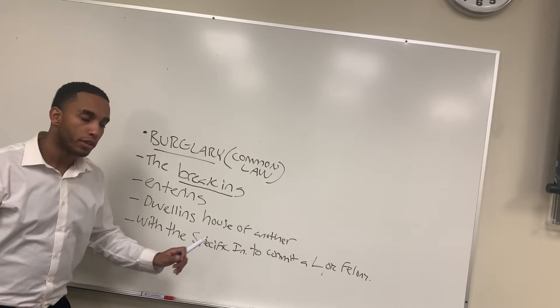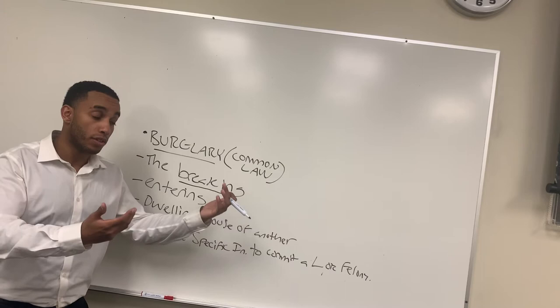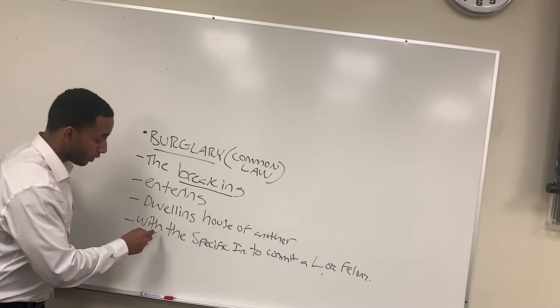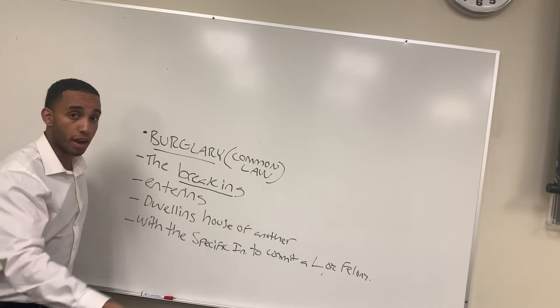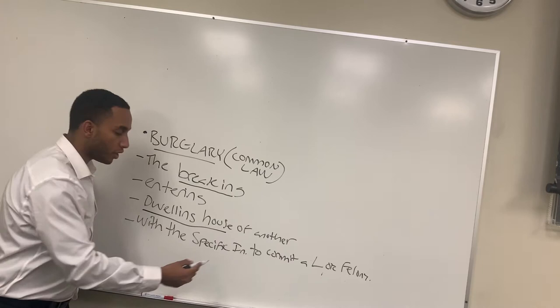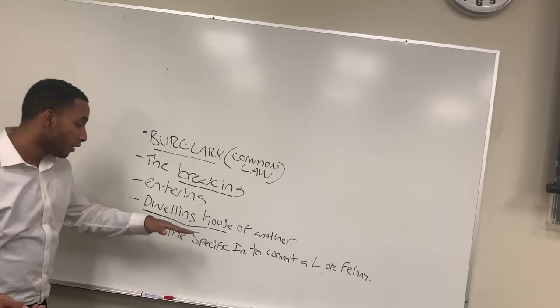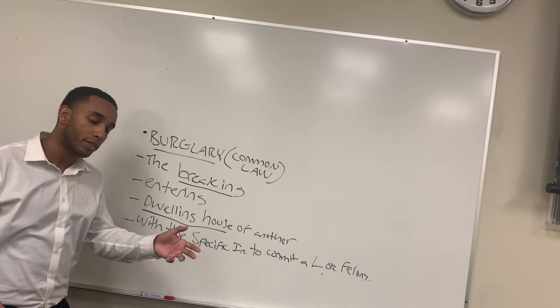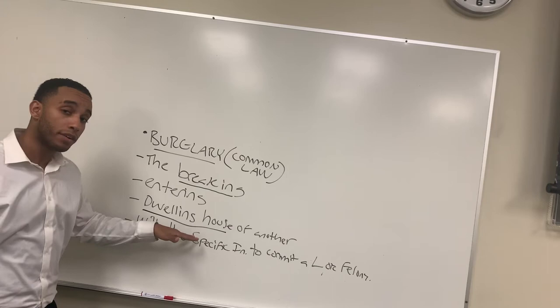The entering element simply means the defendant successfully enters the house of the victim. The third element — very critical in understanding the difference between common law and modern law — is the dwelling house of another during the nighttime. This element requires it to be a dwelling house: not a store, not an office, not a school, but a place where someone actually sleeps. And it has to be during the nighttime, meaning sunset to sunrise. If it's not during the nighttime or not a dwelling house, this element will not be satisfied.